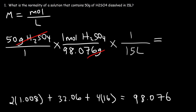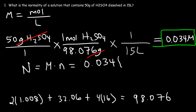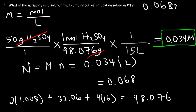So it's 50 divided by 98.076, divided by 15, which gives a molarity of 0.034 M. Now we can calculate the normality using the equation: normality equals molarity times n. The molarity is 0.034 and there are two hydrogen atoms per formula unit, so n is 2. This works out to be 0.068 N. That's one way to find the normality of this solution.